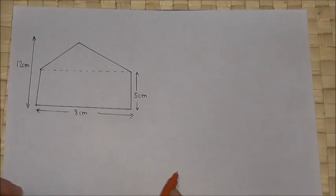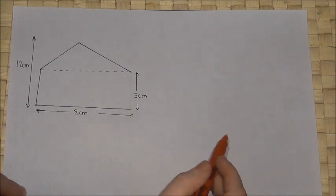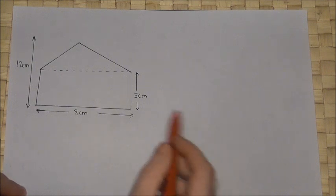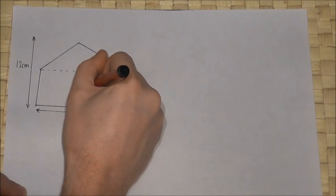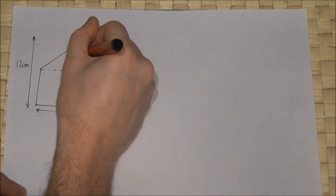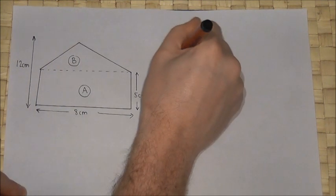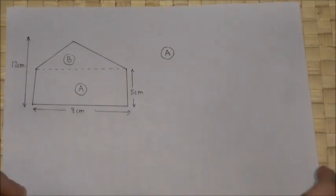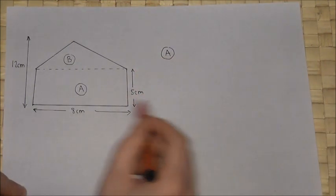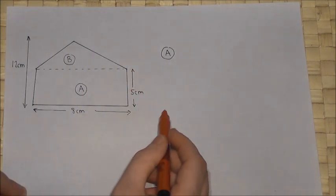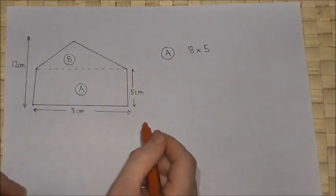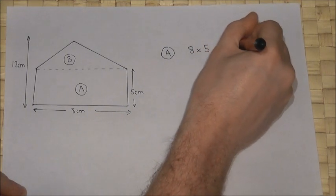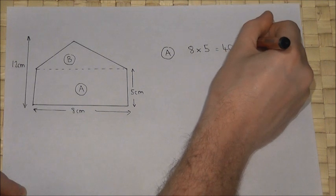In the next example we look at a composite shape, which is basically two shapes joined together. To find the area of a composite shape, the trick is to find the area of both shapes separately and then add them together. In this case we have a rectangle and a triangle. The rectangle has dimensions 8 and 5, so we multiply: 8 times 5 is 40 centimetres squared.